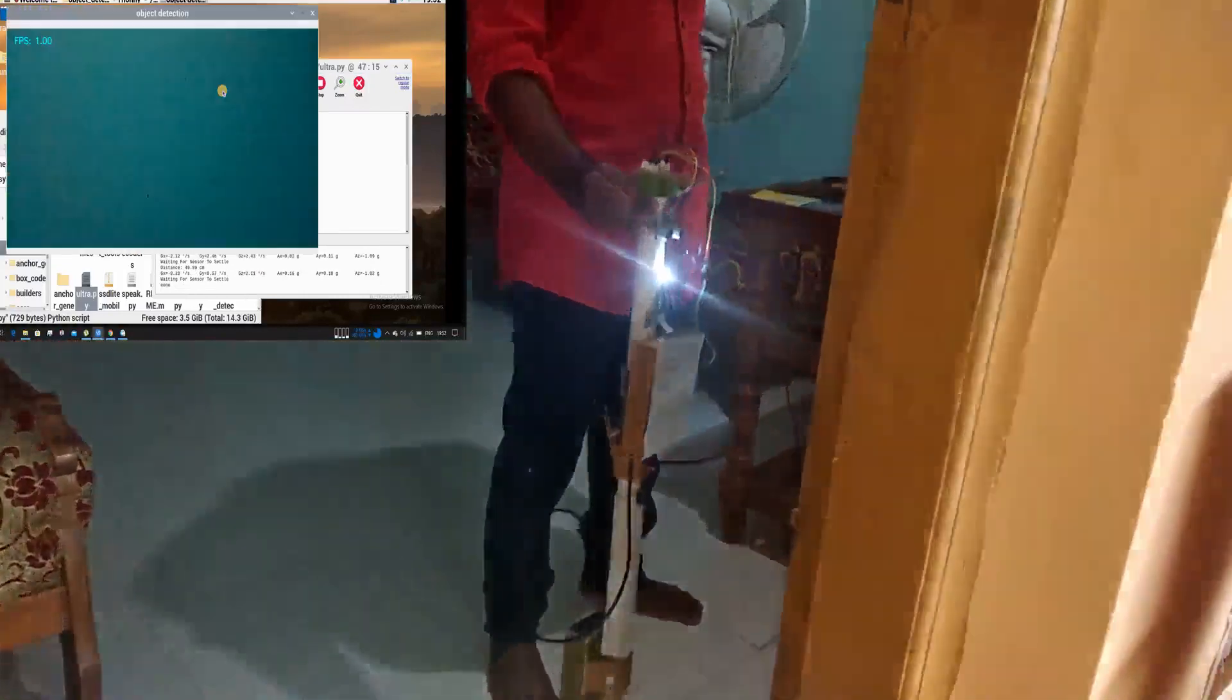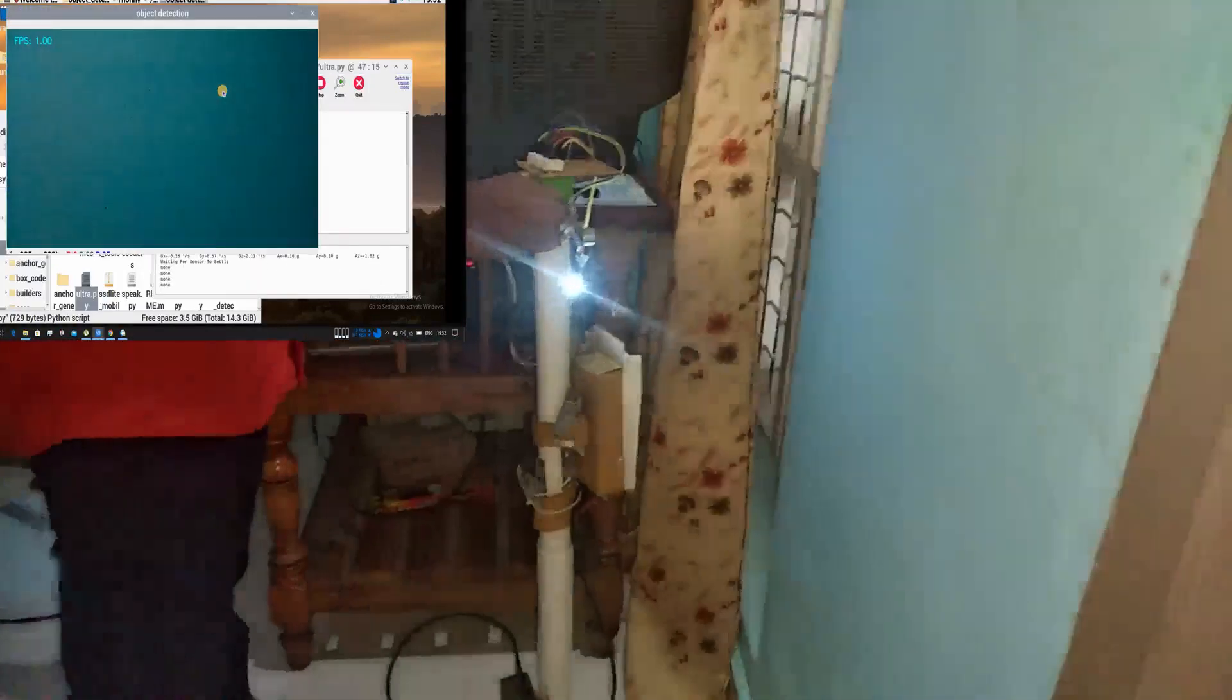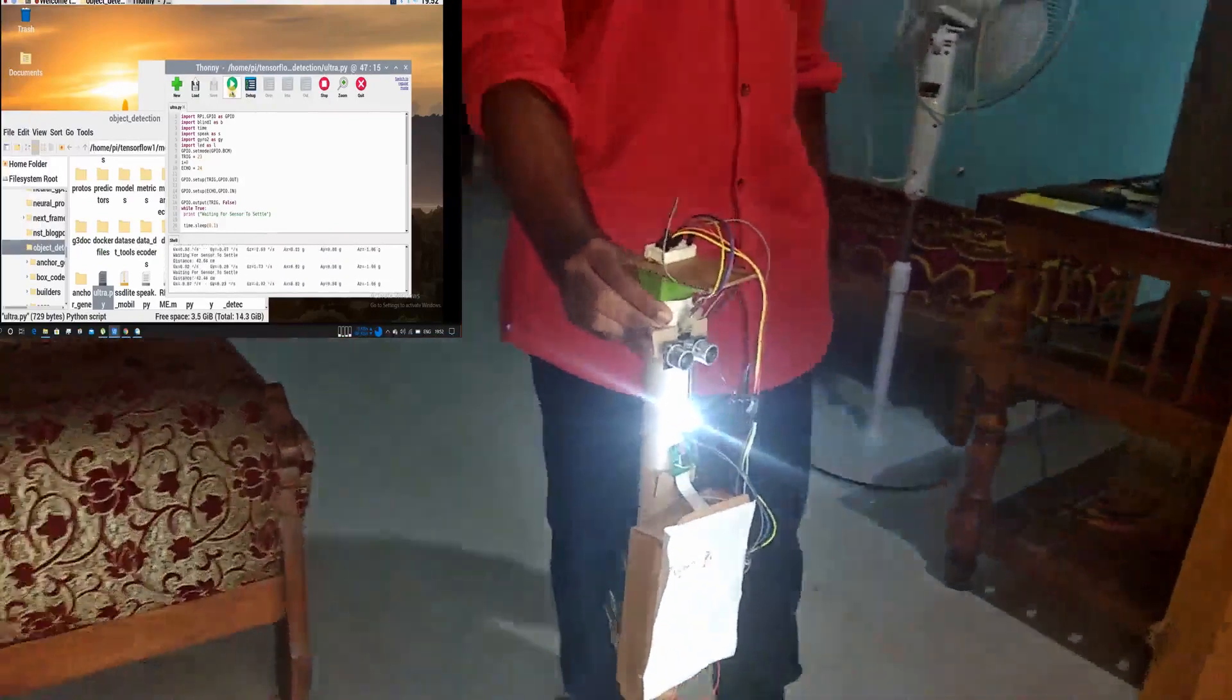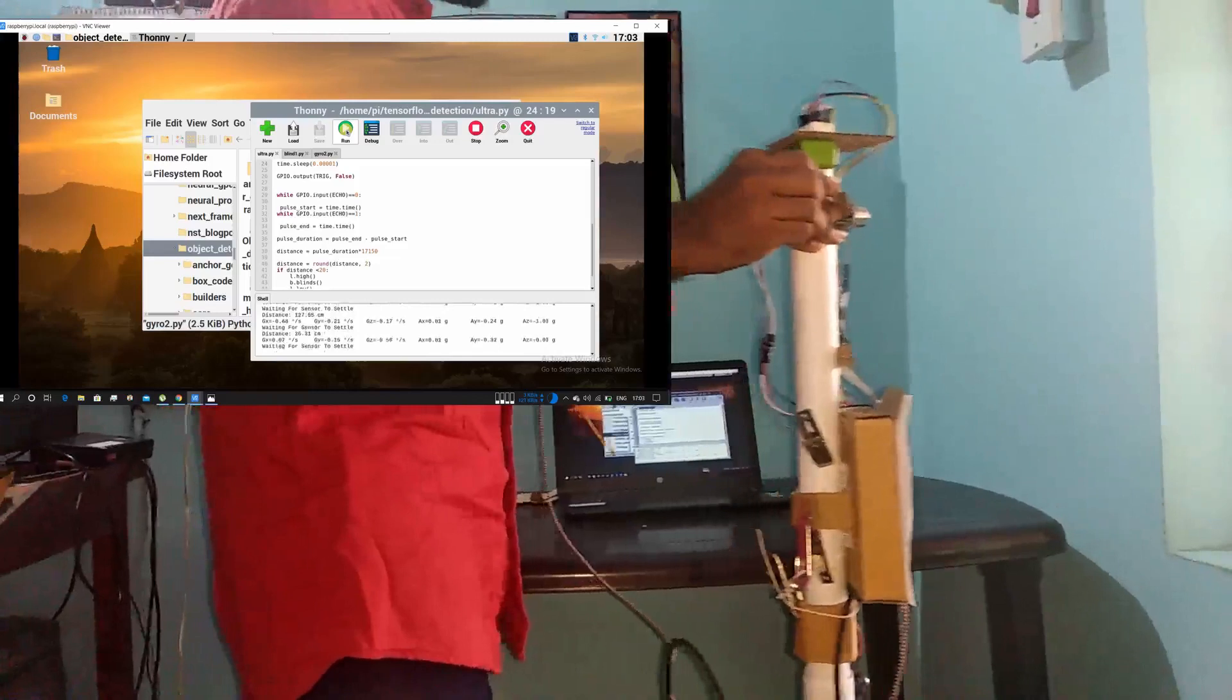When there is no object, the camera shuts down by itself, but the buzzer will still alarm if an obstacle is in front of it. If no obstacle is found, it will stop alarming.